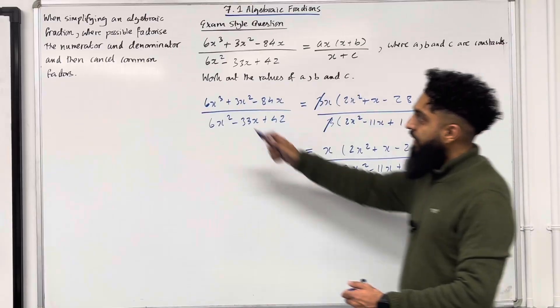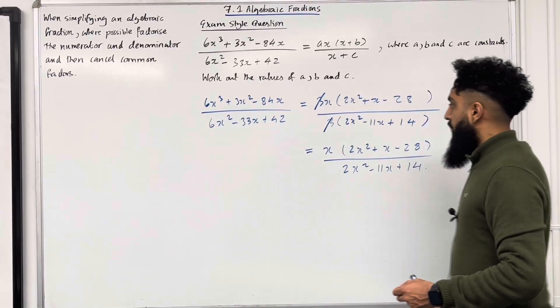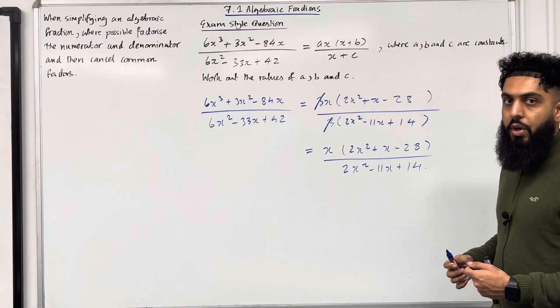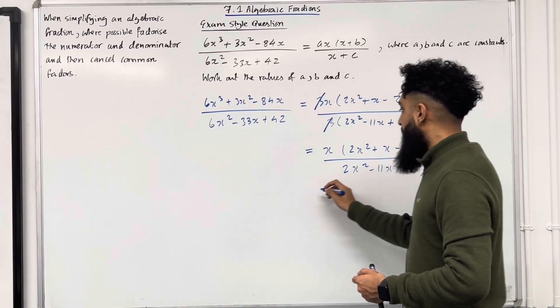Right, so we have to follow this fact over here. We need to factorise the numerator and denominator and possibly cancel common factors. So in the numerator, I've got x in double brackets.